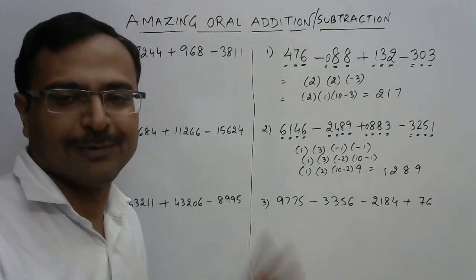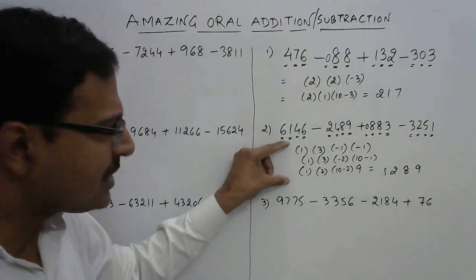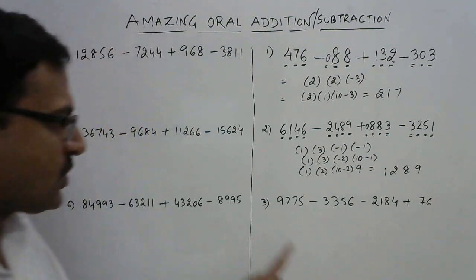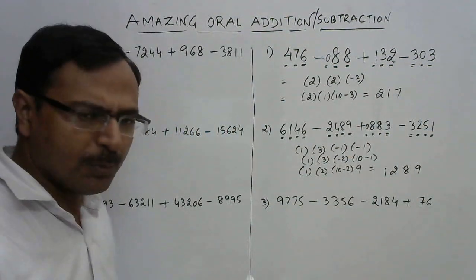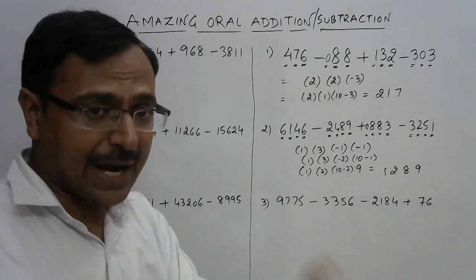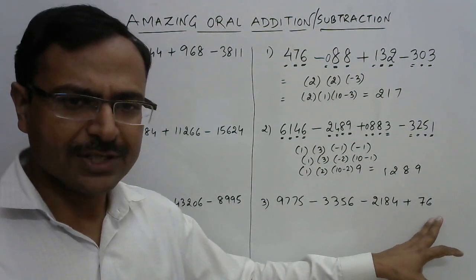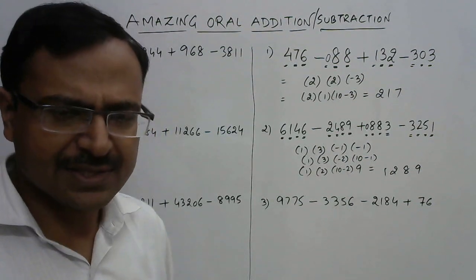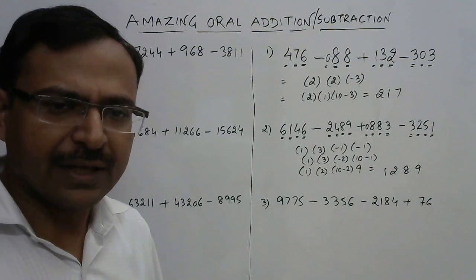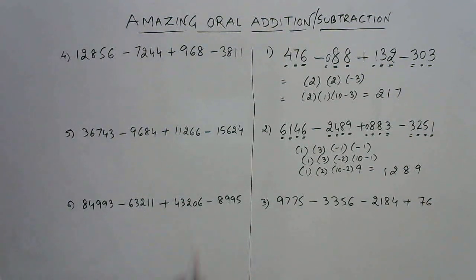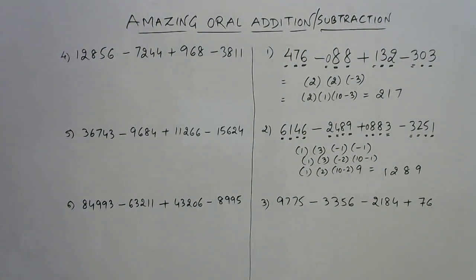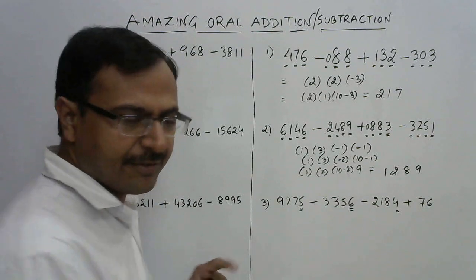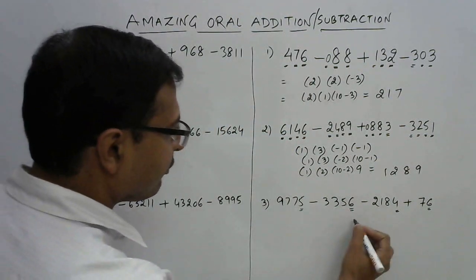So how much time are we going to take to solve this question this way? I think a fraction of the time of the traditional method. Now let's see the third question: 4 digits, 4 digits, 4 digits, and 2 digits. I don't bother putting zeros now because the third and fourth digits from the right for the 2-digit number are obviously zero — a step you can skip. Carrying on: 5 minus 6 is minus 1, minus 1 minus 4 is minus 5, and minus 5 plus 6 is 1. When you get a positive number, your steps become fewer.